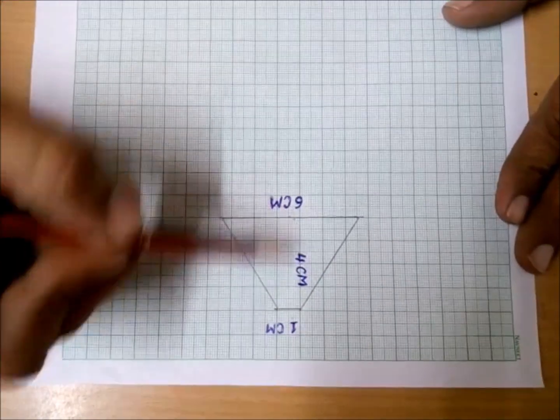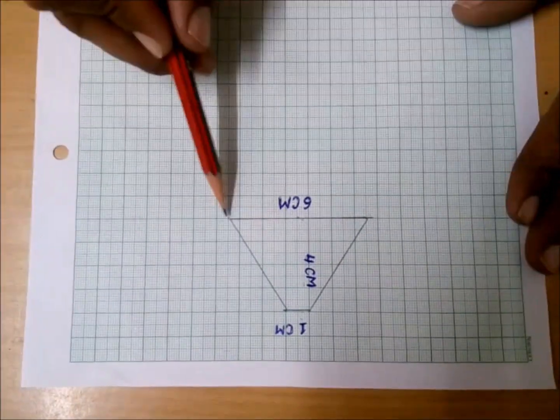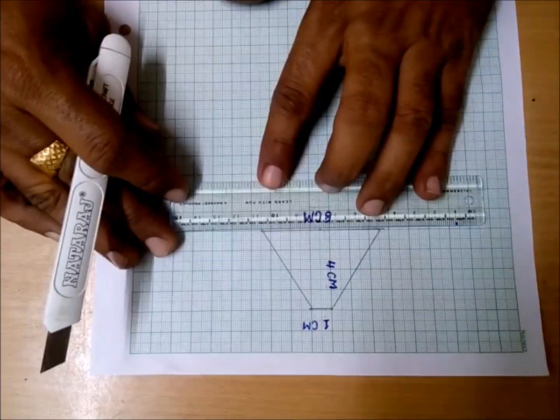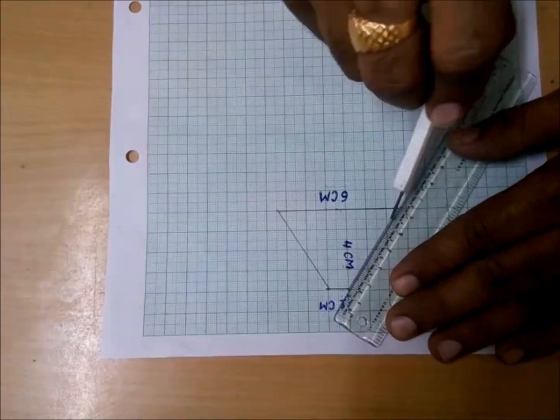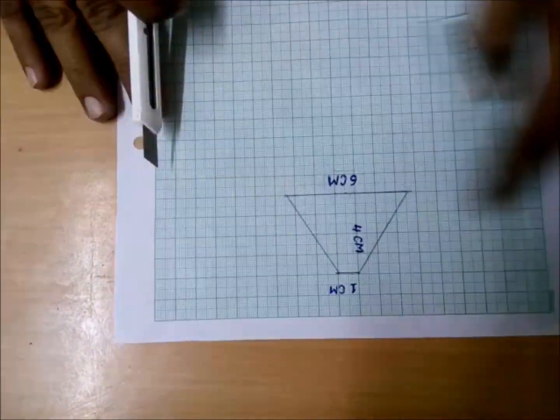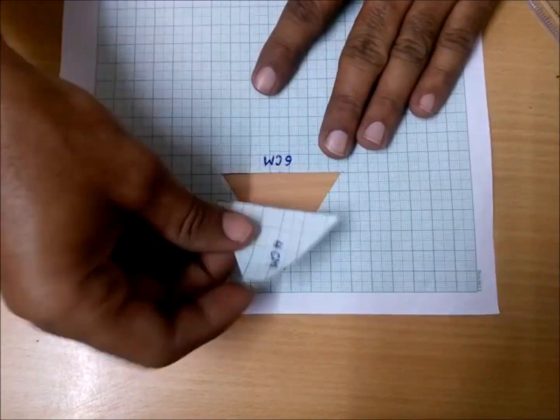This side is 1 centimeter, height 4 centimeter, and this side is 6 centimeter. Now cut this trapezoid with help of cutter or scissor. While cutting with cutter, please take care of your finger. Now take out this trapezoid from the graph paper.